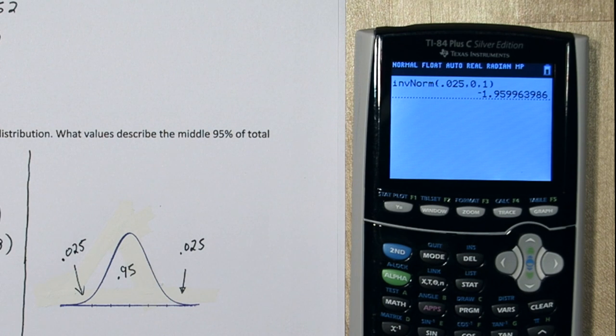Now the empirical rule says two standard deviations cut off the lower 2.5%. But in reality, it's this many standard deviations. So here's what I'm going to do. I'm going to multiply this by negative 1 just to make it a positive value.